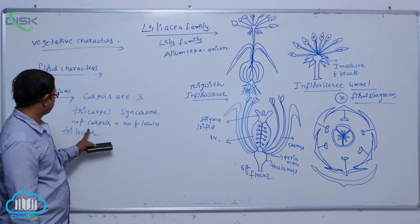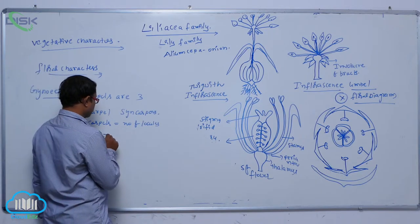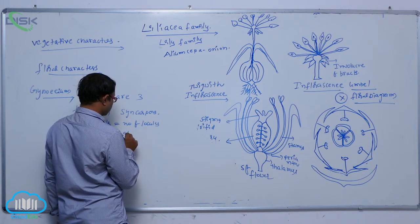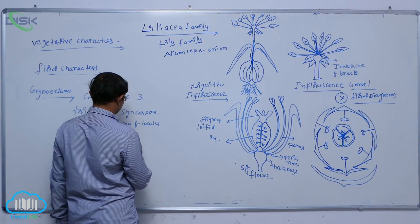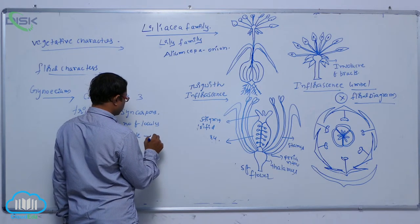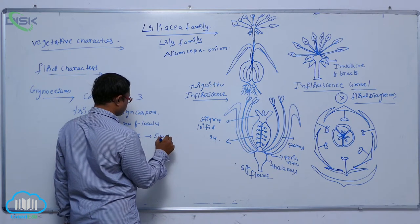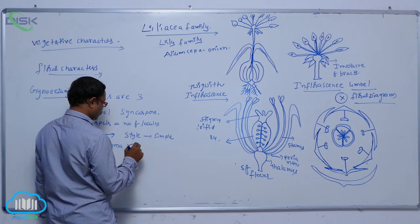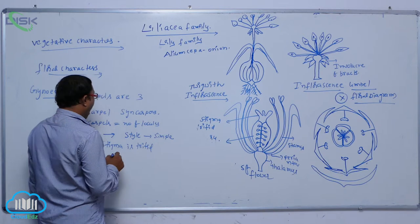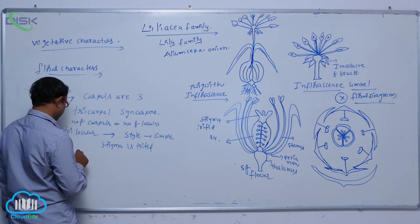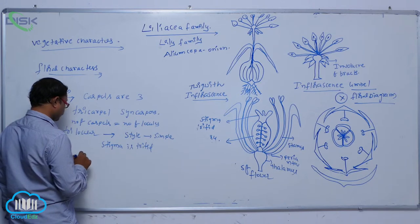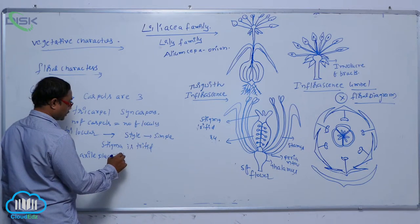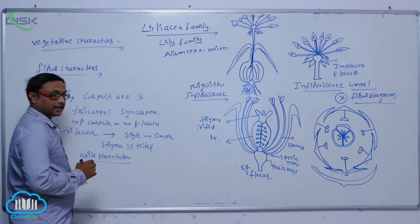Number of carpels equals number of locules — that's why it is known as the trilocular condition. Carpels are three, so tricarpellary, syncarpous. Number of carpels equals number of locules. So in that carpel, the ovary — style is simple, stigma is trifid.